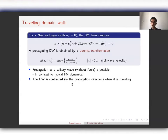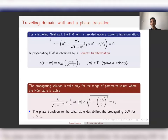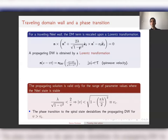However, we should revisit this problem because it yields an important additional result. When we assume a traveling Néel wall and apply a Lorentz transformation, we find that due to the space derivative in the DM term, the effective DM coefficient is rescaled to λ/√(1 − v²). The traveling domain wall still exists, but this effective coefficient must remain smaller than 2/π for the Néel state to remain the ground state; otherwise the Néel state is destabilized.